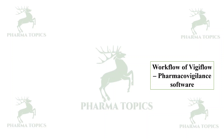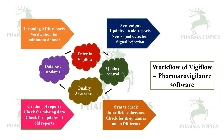The workflow of VigiFlow begins with incoming ADR reports being verified for the minimum data set. The database updates entries as they come in, followed by quality checks and quality assurance. New output includes updates, reports, and new signal detection or signal rejection. The system then performs grading of reports, checks for missing data, updates of old reports, synchronization, syntax checks, and interfield coherence checks for drug names and ADR terms.